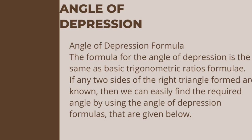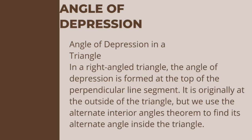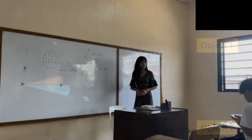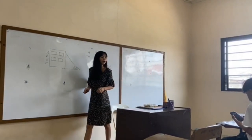Angle of depression formula: The formula for the angle of depression is the same as the basic trigonometric ratios formulae. If any two sides of the right triangle formed are known, then we can easily find the required angle by using the angle of depression formulas. Angle of depression in a triangle: In a right-angled triangle, the angle of depression is formed at the top of the perpendicular line segment. It is originally at the outside of the triangle, but we use the alternate interior angles theorem to find its alternate angle inside the triangle.